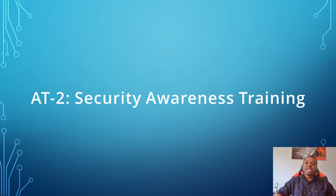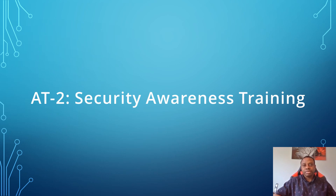What are some of the evidence that we can request to satisfy the implementation of the AT2 control? We can request the security awareness policies and procedures, the security awareness training record, and certificates of completion for each user that took the training.